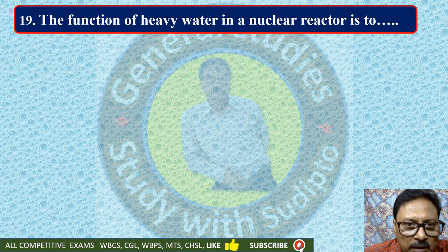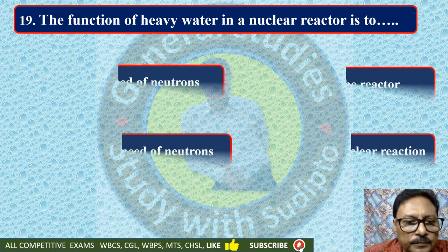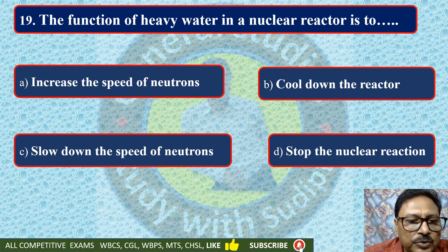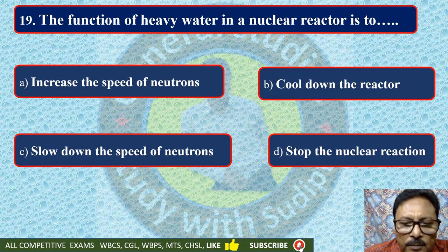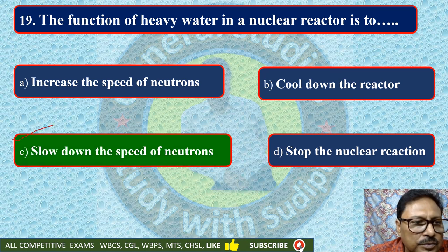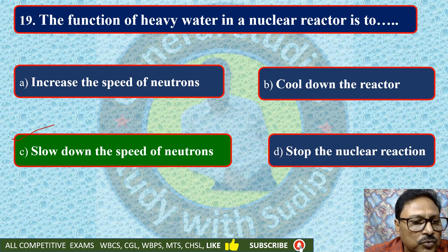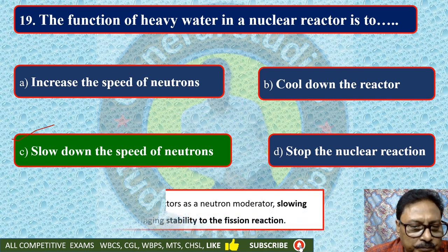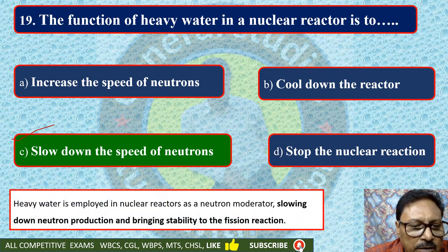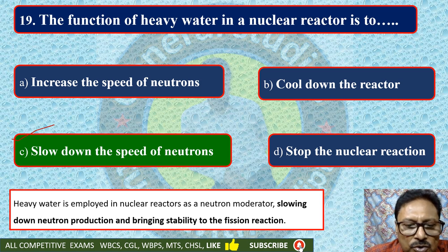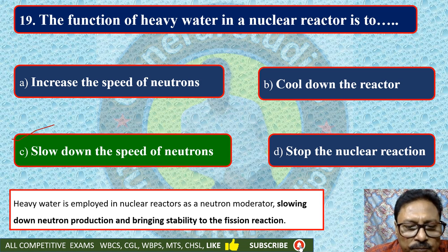The function of heavy water in a nuclear reactor is to — increase the speed of neutrons, cool down the reactor, slow down the speed of neutrons, or stop the nuclear reaction. The answer is slow down the speed of neutrons. Heavy water D₂O is used in nuclear reactors to slow down the speed of neutrons. Heavy water is employed as a neutron moderator, slowing down neutron production and bringing stability to the fission reaction.